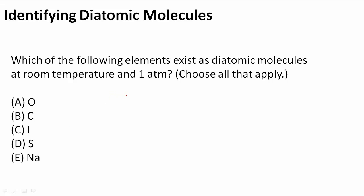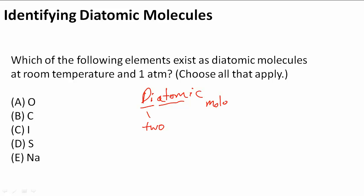Let's first think about what diatomic means. Diatomic means that 'di' stands for two in science, so that means two atoms. When you find diatomic molecules they will usually be attached to each other, so there will be two atoms of the same element together. Only a few elements do this because they want to be more stable, so you find that they exist in nature as diatomic molecules.